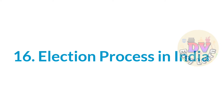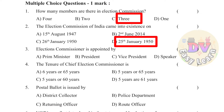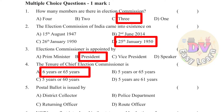Chapter 16: Election Process in India. Question 1: How many members are there in the Election Commission? Question 2: The Election Commission of India came into existence — Answer: 25th January 1950. Question 3: Election Commissioner is appointed by — Answer: President. Question 4: The tenure of Chief Election Commissioner — Answer: 6 years from the date of appointment or 65 years of age, whichever is earlier. Question 5: Postal ballot issued by — Answer: Returning Officer.